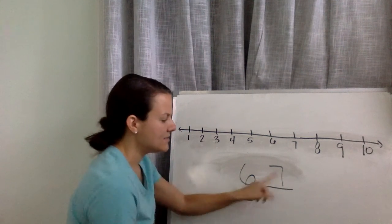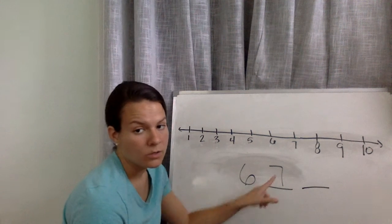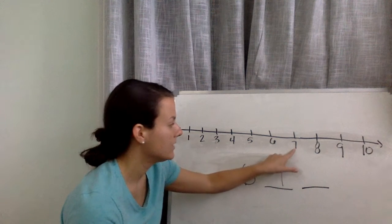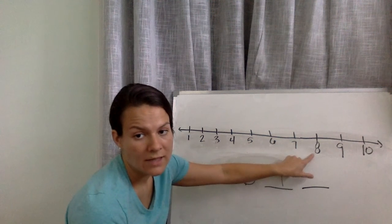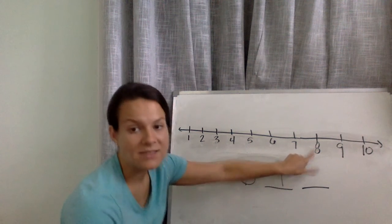Alright. Let's see what's one more than 7. So what do we do? We put our finger on the number line to find this number 7, and we're going to jump. 8. 8 is bigger than 7, so it is one more than 7.